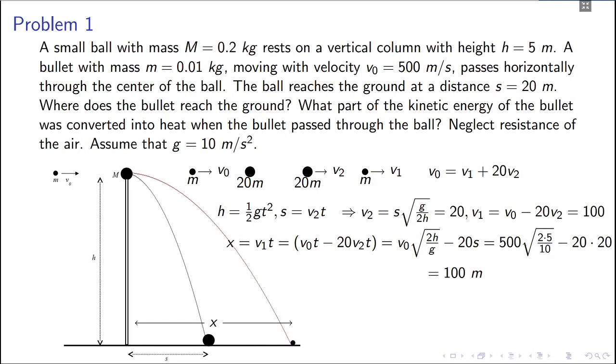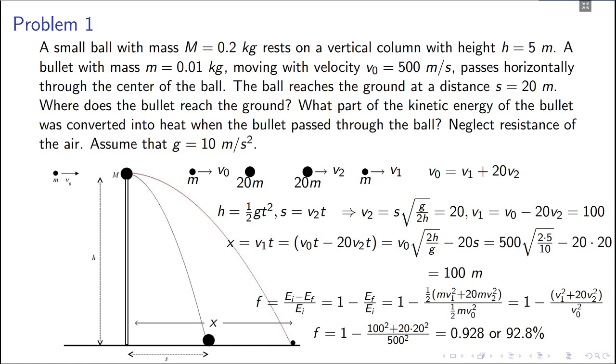So you'll need to find v1 and v2. From here you can find v2, v2 is s times square root of g by 2h. t is square root of 2h by g, so you can get v2 which comes out to be 20. v1 then, if you put v2 here you can get v1, so v1 is v0 minus 20v2, so that comes out to be 100. Then you just look at the initial energy minus final energy divided by the initial energy, that will give you the fraction. So that's 1 minus Ef by Ei. Look at the final energy, it's half mv1 square plus half of 20m v2 square divided by Ei which is half mv0 square. You just put the values and it comes out to be 0.928, or in terms of percentage it will be 92%, so around 90 to 93% of energy is lost during the collision.